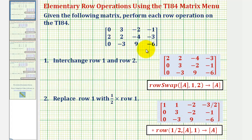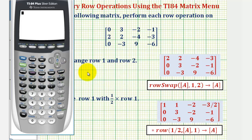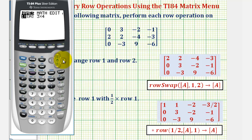The first step is to enter the original matrix, which is a three by four matrix. I've already done this to save time, but for a quick review: to enter a matrix, we press second, matrix, right arrow to edit, enter, enter the dimensions, and then enter the elements.